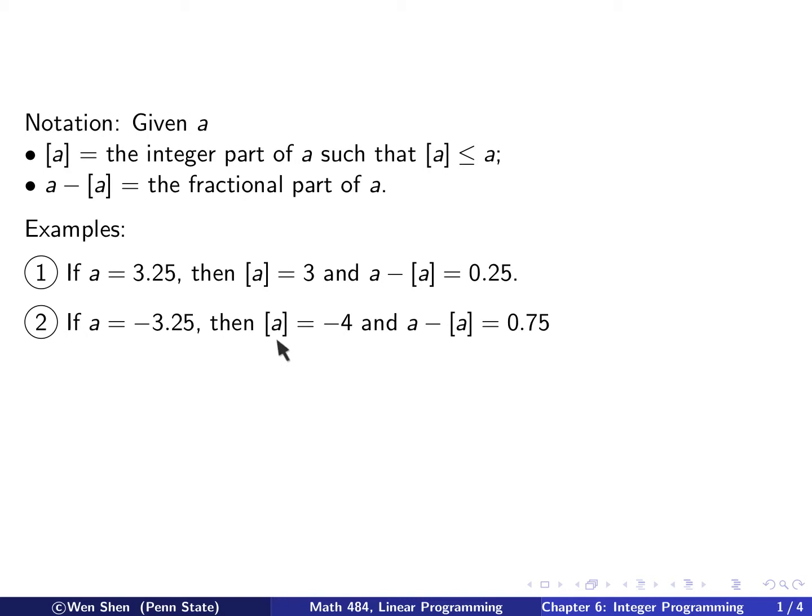Then what is the integer part of A? Well, it should be less than A, so here it actually becomes negative 4. And then A minus the integer part of A is negative 3.25 minus negative 4, which gives me 0.75. So pay close attention to this second example. When you have a negative number, it's quite different.